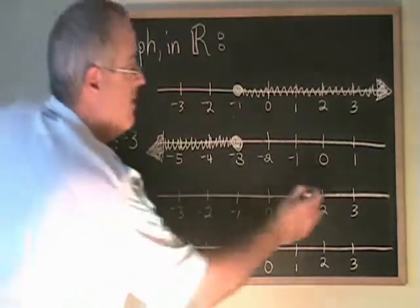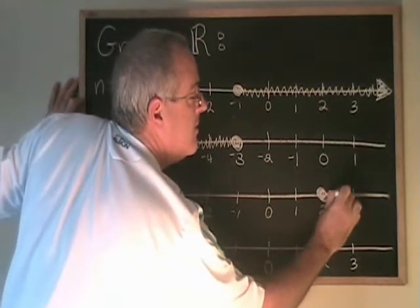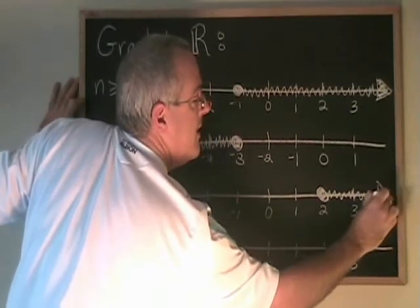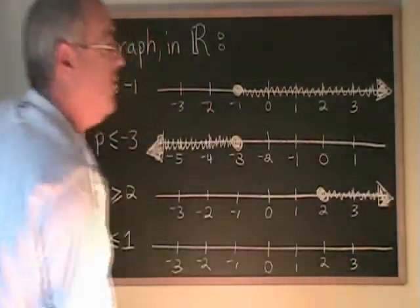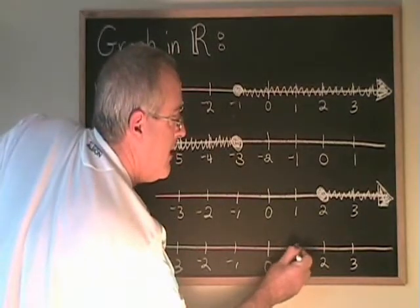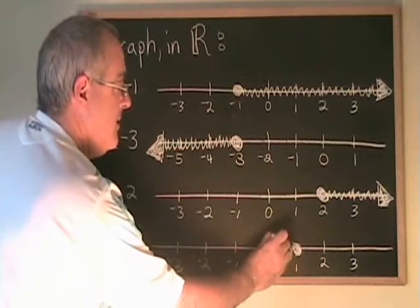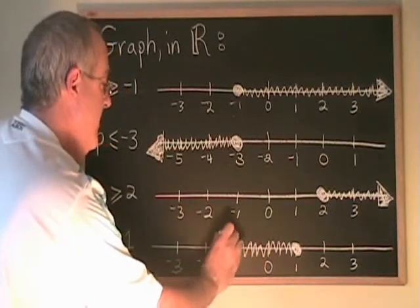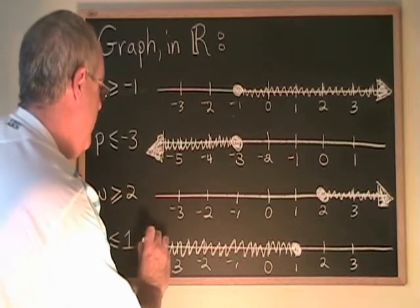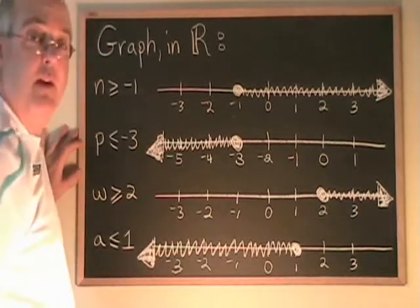W greater than or equal to 2. 2 is equal to 2, so it's part of the answer. All the numbers greater than 2 are over here; I use shading to show them, then make an arrow to show that it keeps going. A less than or equal to 1: 1 is part of the answer, so I put a dot there. All the numbers less than 1 are part of the answer, so I use shading, then put an arrow to show it goes on and on forever in the negative direction.